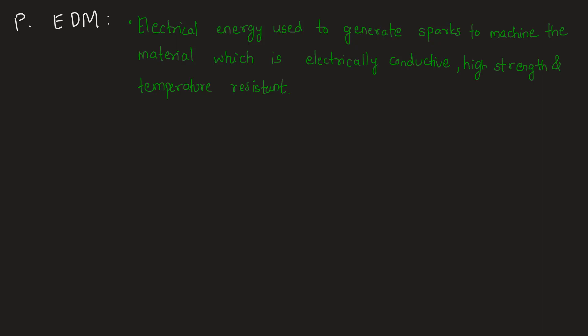So EDM matches with option 2, machining of electrically conductive materials. P matches with 2. Next, Q - Ultrasonic Machining. Materials that are poor conductors of electricity and generally brittle in nature are machined using ultrasonic machining, such as glass.